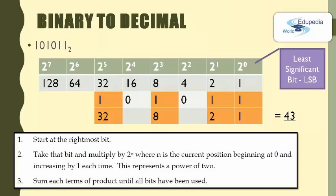So 32 plus 8 plus 2 plus 1 equals 43. This binary number represents the decimal number 43.